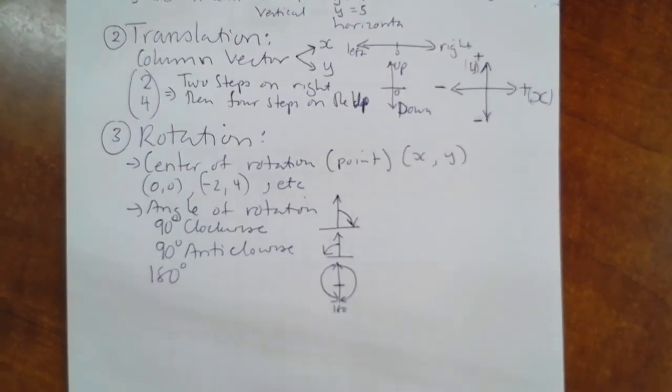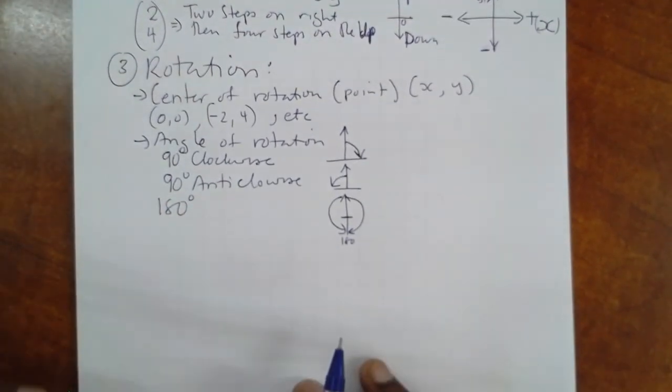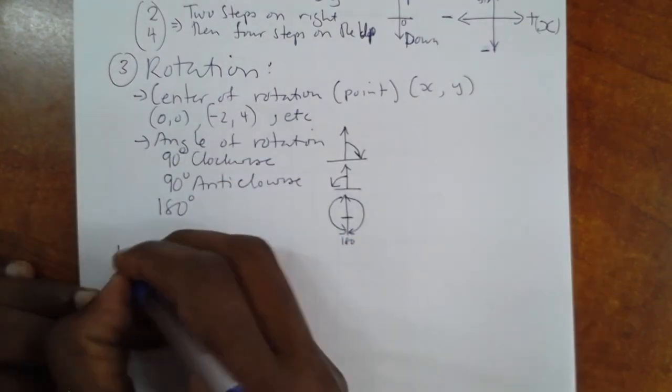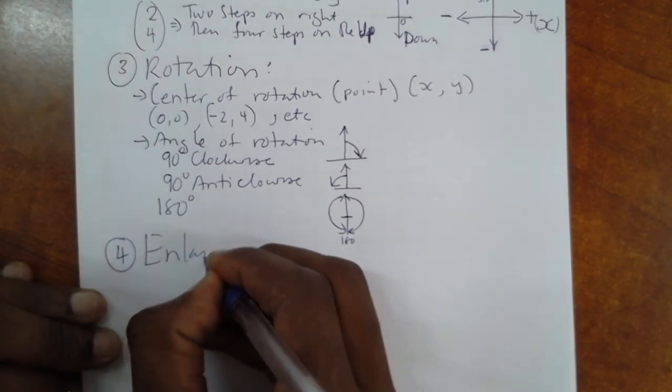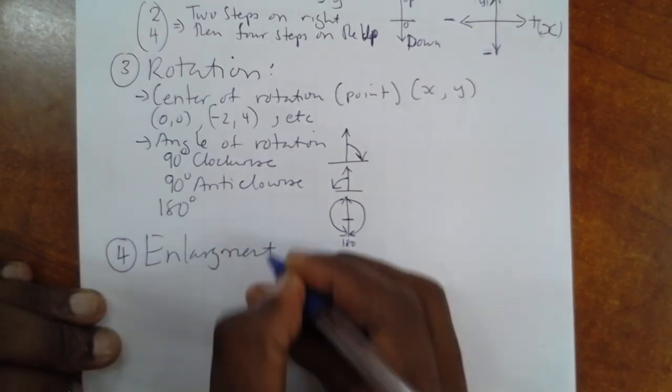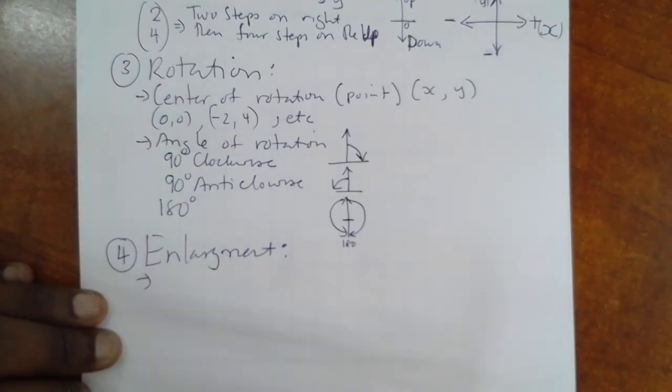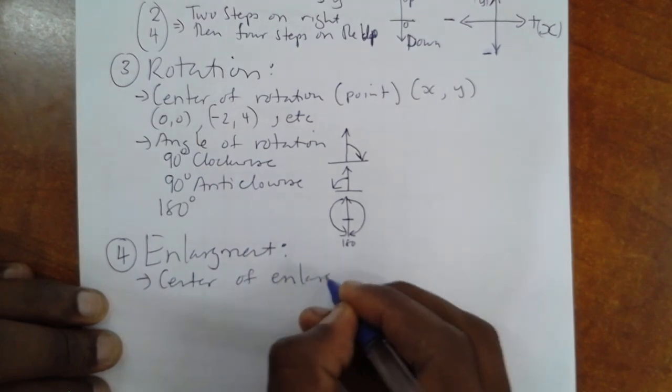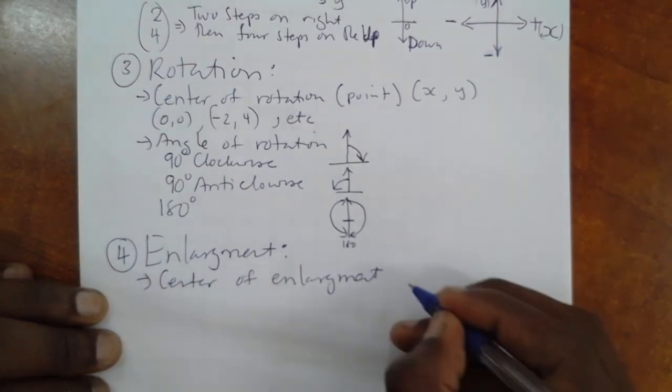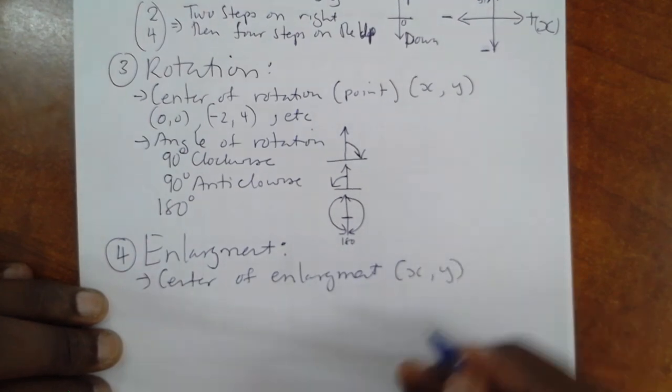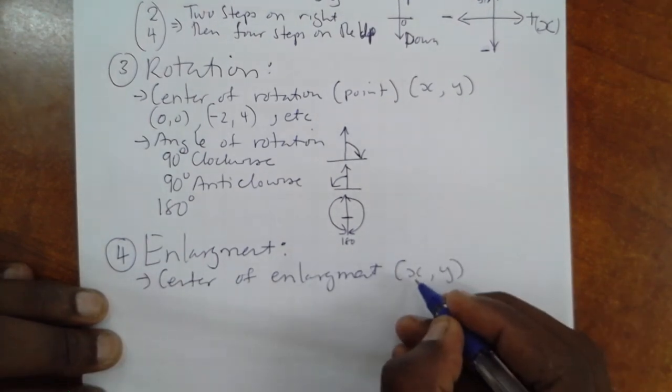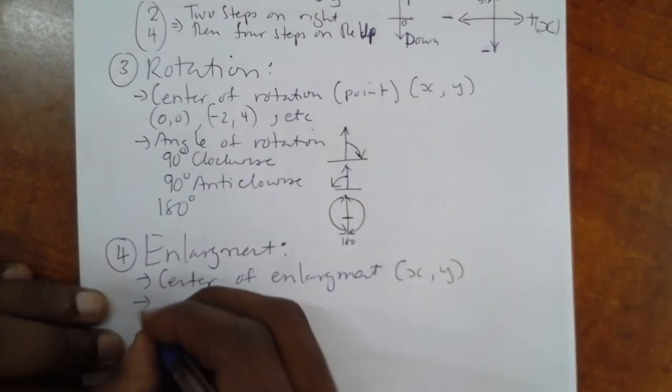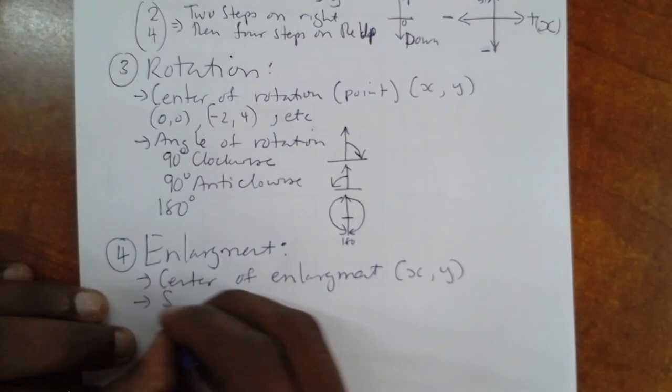So, we have seen under rotation, we need center and the angle. Now, we look at enlargement. To carry on enlargement, we also need two things. We need the center of enlargement. As we said before, a center is always a point and it carries x and y, as we have seen already there. Together with the center of enlargement, we need the scale factor.